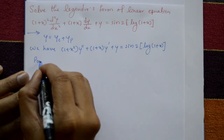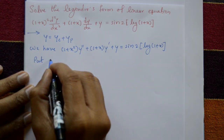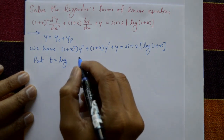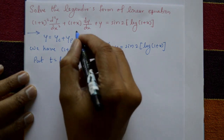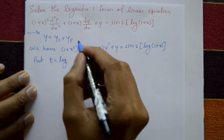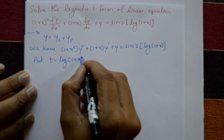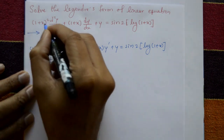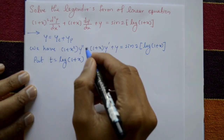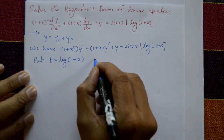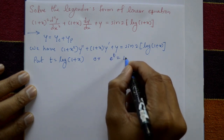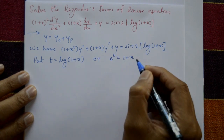Now put t = log(ax + b), which means t = log(1 + x). Take this substitution: 1 + x. Or equivalently, e^t = 1 + x.